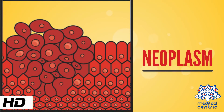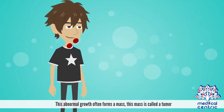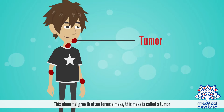Today's topic is neoplasm. A neoplasm is an abnormal and excessive growth of cells. This abnormal growth often forms a mass, which is called a tumor.